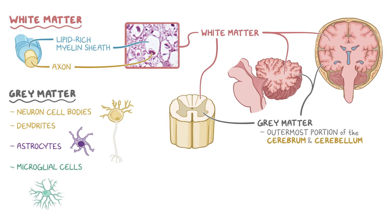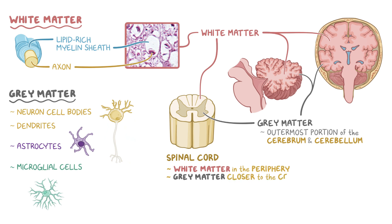On the other hand, the spinal cord has the opposite arrangement, with white matter mainly in the periphery and gray matter mostly located closer to the center, forming an H- or butterfly-shaped appearance when looking at a cross-section of the spinal cord.